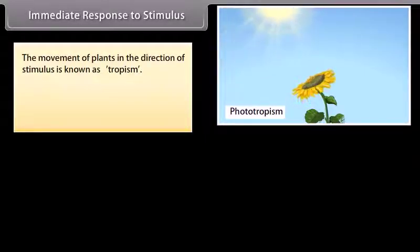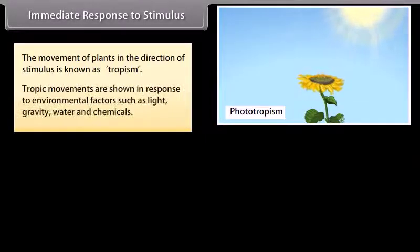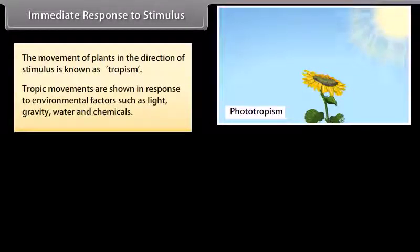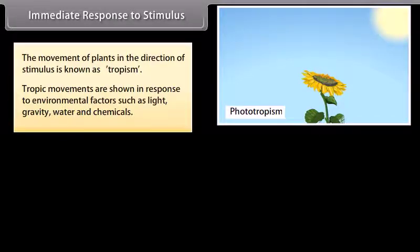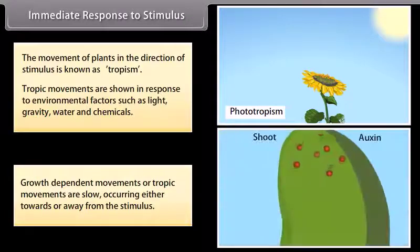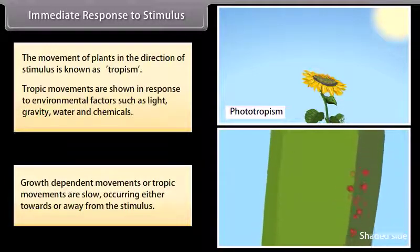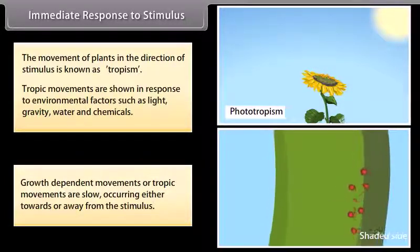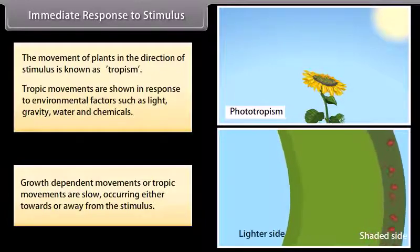The movement of plants in the direction of a stimulus is known as tropism. Tropic movements are shown in response to environmental factors such as light, gravity, water, and chemicals. Growth dependent movements, or tropic movements, are slow, occurring either towards or away from the stimulus.